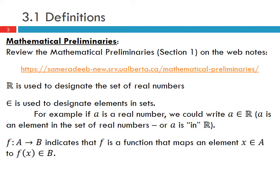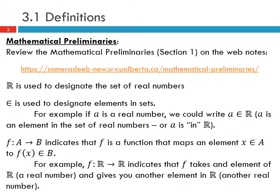When we write f: A → B, it indicates that f is a function that maps an element x ∈ A to f(x) ∈ B. For example, f: ℝ → ℝ indicates that f takes a real number and gives another real number. So if f is the function x², it takes a real number like 2 and gives f(2) = 4, again another real number. Take a look at the mathematical preliminaries section — you don't need to read all of it, just familiarize yourselves with the important notation.